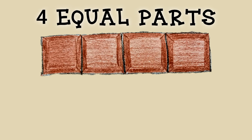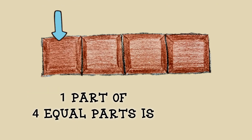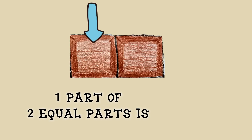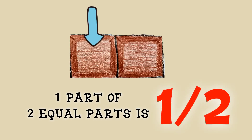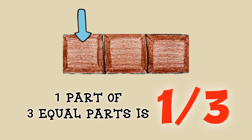The chocolate has four equal parts, so she gave one part of the chocolate to each of her friends. One part of four equal parts is one-fourth. One part of two equal parts is one-half. One part of three equal parts is one-third.